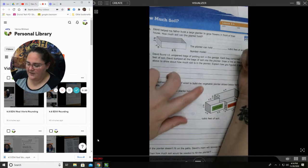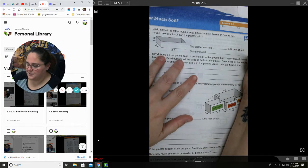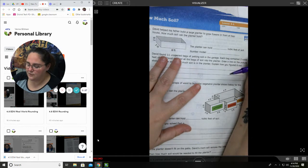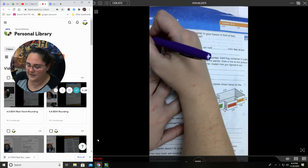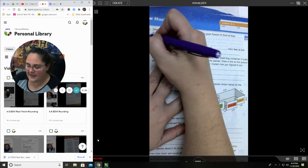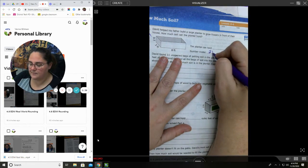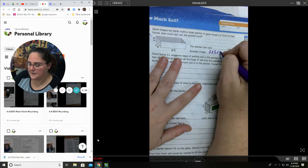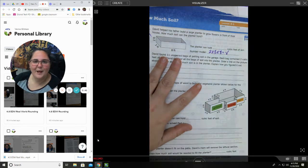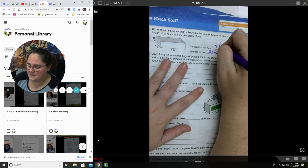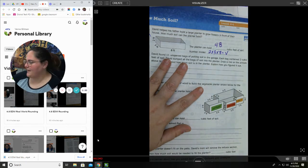Number one says, David helped his father build a large planter to grow flowers in the front of their house. How much soil can the planter hold? To find the volume, you're going to do length times width times height. So, 2 times 3 times 8. That will be my number model. Equals volume. Let's do the math. 2 times 3 is 6. Times 8 is 48. 48 cubic feet of soil. That is how you're going to do that problem.